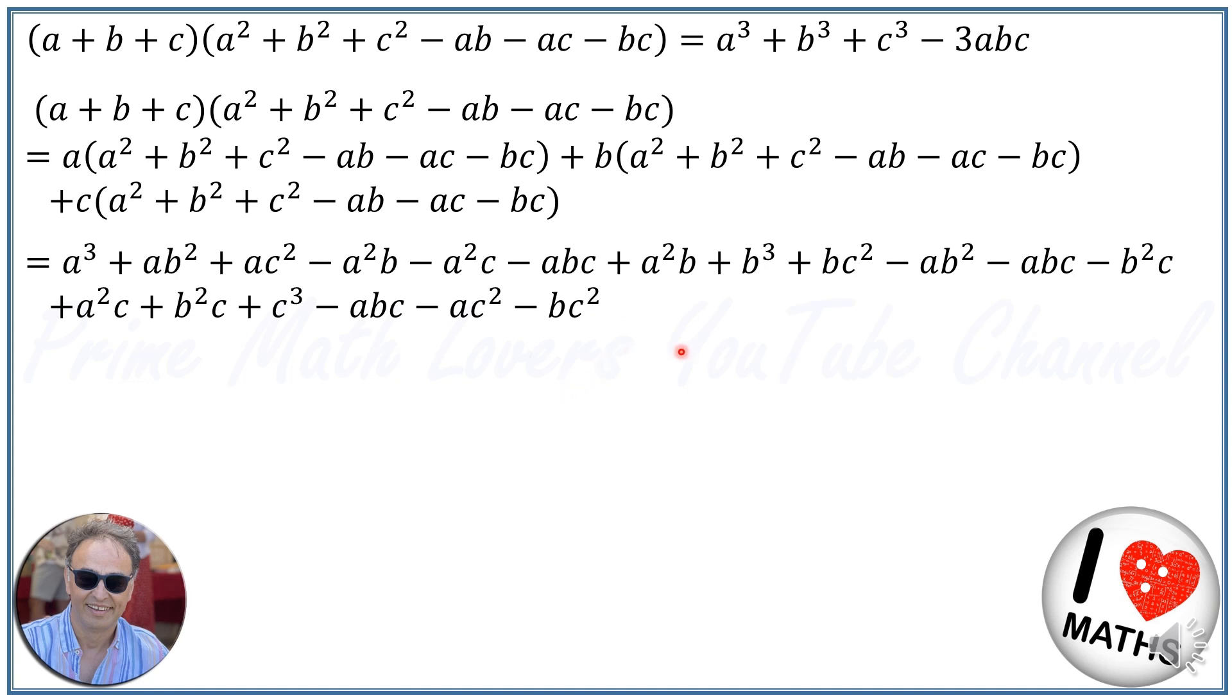Eliminating the ab squared with minus ab squared, ac squared with minus ac squared, bc squared with bc squared. The positive and negative terms cancel out.